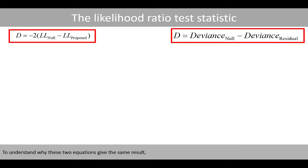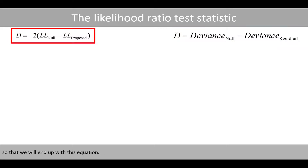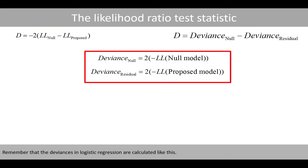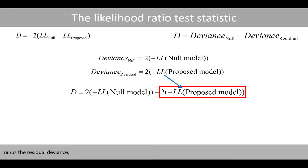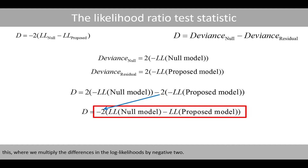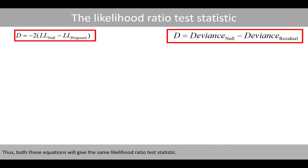To understand why these two equations give the same result, let's reformulate the equation. Remember that the deviances in logistic regression are calculated by multiplying negative two by the log likelihood. If we formulate the likelihood ratio test statistic as the null deviance minus the residual deviance, we can factor this expression into multiplying the difference in the log likelihoods by negative two. We see that this expression is identical to the original formula, so both equations give the same likelihood ratio test statistic.